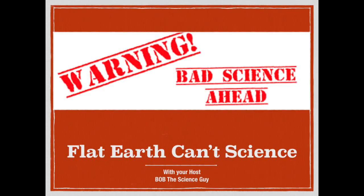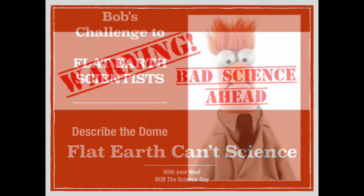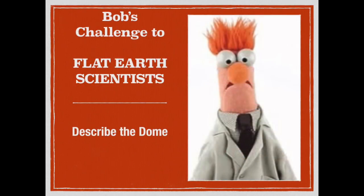Hello and greetings from northern Michigan. This is Bob the Science Guy from Flat Earth Can't Science with my first challenge to the Flat Earth scientific community. If you look below you'll see the link to Flat Earth Can't Science episode 4, 'Phuket Word Gets Lost.' In that episode I showed conclusively how a sextant will not work with a fixed position local Polaris and give an accurate latitude.